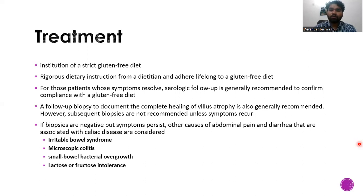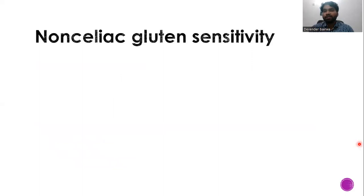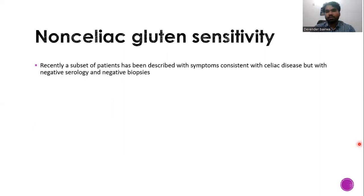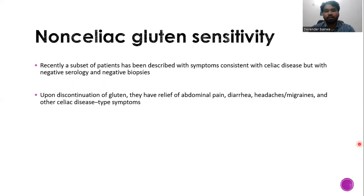Non-celiac gluten sensitivity is a new concept. Some patients do not have antibodies against celiac disease antigens and do not have biopsy findings, yet when they take gluten-containing food they develop symptoms similar to celiac disease. These patients have symptoms consistent with celiac disease but with negative serology and negative biopsies; upon discontinuation of gluten, they have relief of abdominal pain, diarrhea, headache, migraine, and other celiac-type symptoms. This subset is known as non-celiac gluten sensitivity — the etiology is currently unknown.